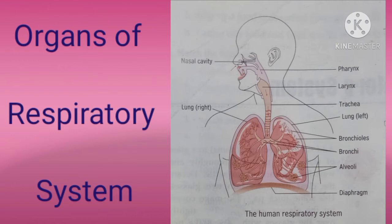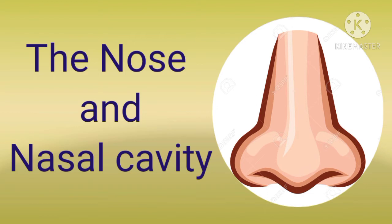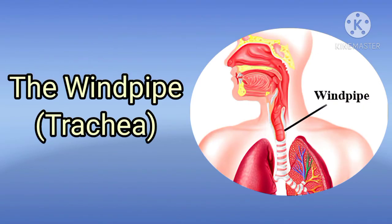Now we first discuss about the nose and nasal cavity. Air enters the body through the nose. Externally, the nose consists of two nostrils. The inner wall of the nasal cavity is lined with hair and mucus. The hairs trap dust particles and germs that enter along the inhaled air. The mucus makes the air passage moist and sticky. The membrane of the inner lining of the nose has cilia. The dust particles falling on the sticky surface are swept out by the cilia towards the throat.